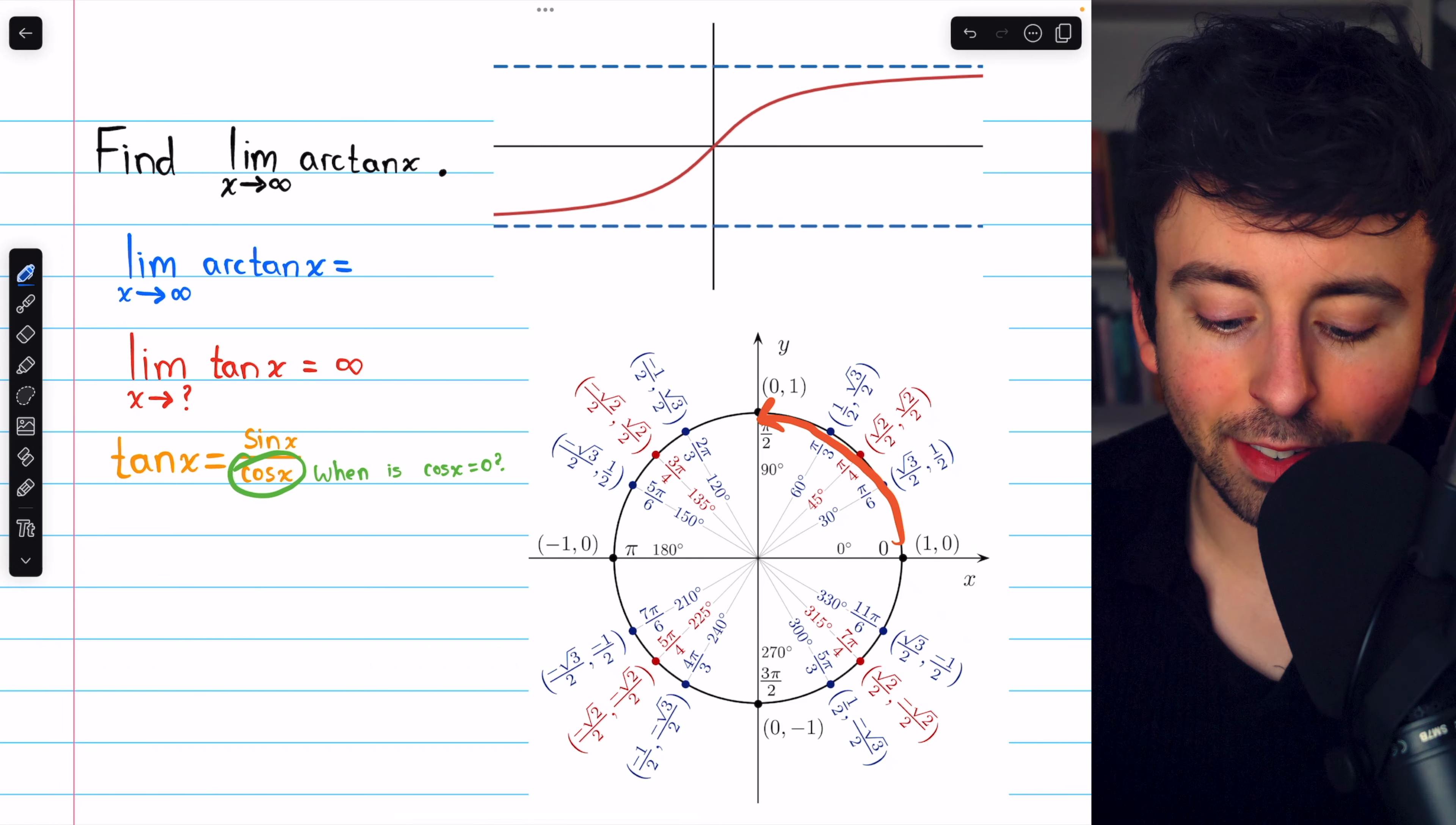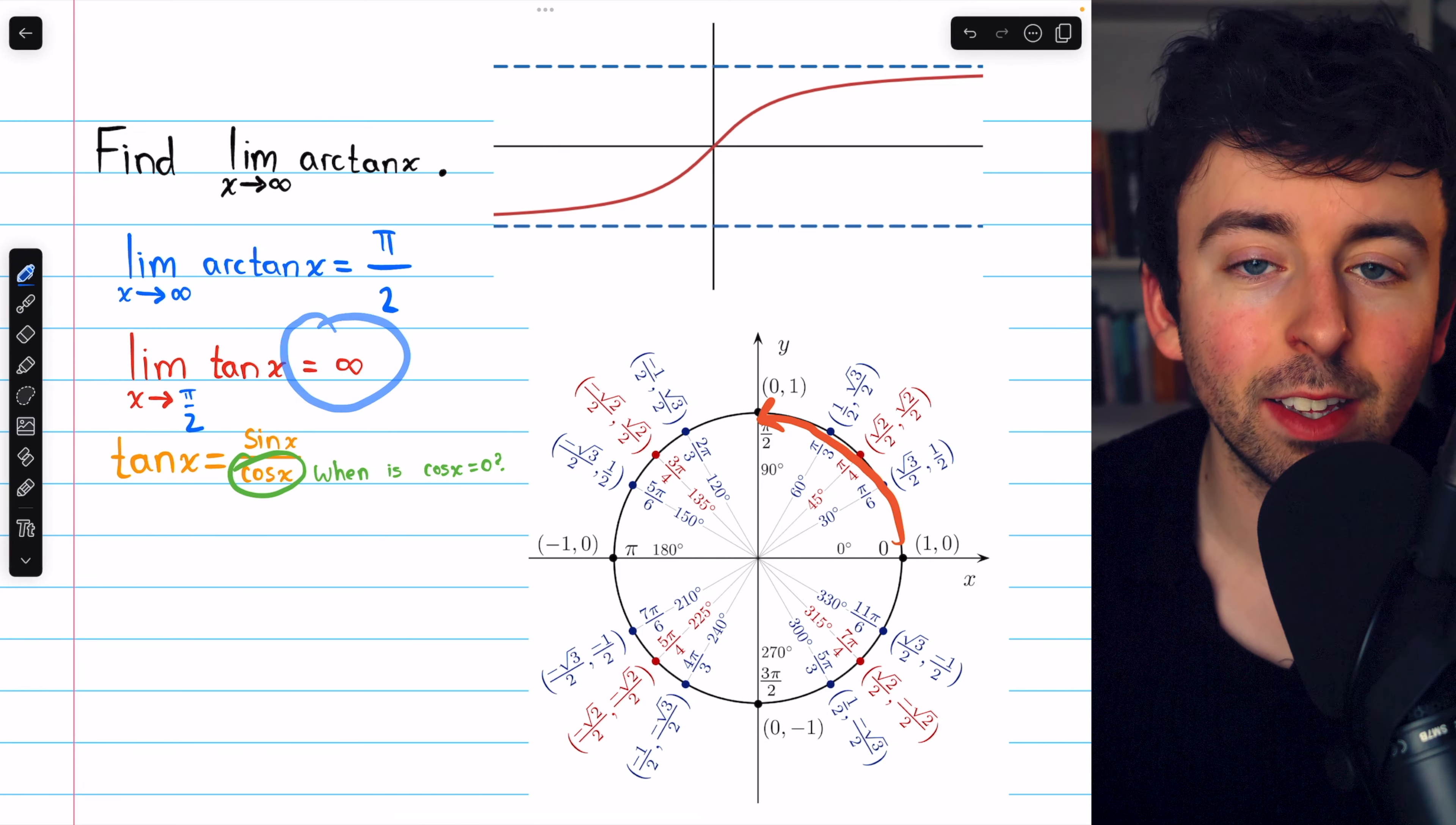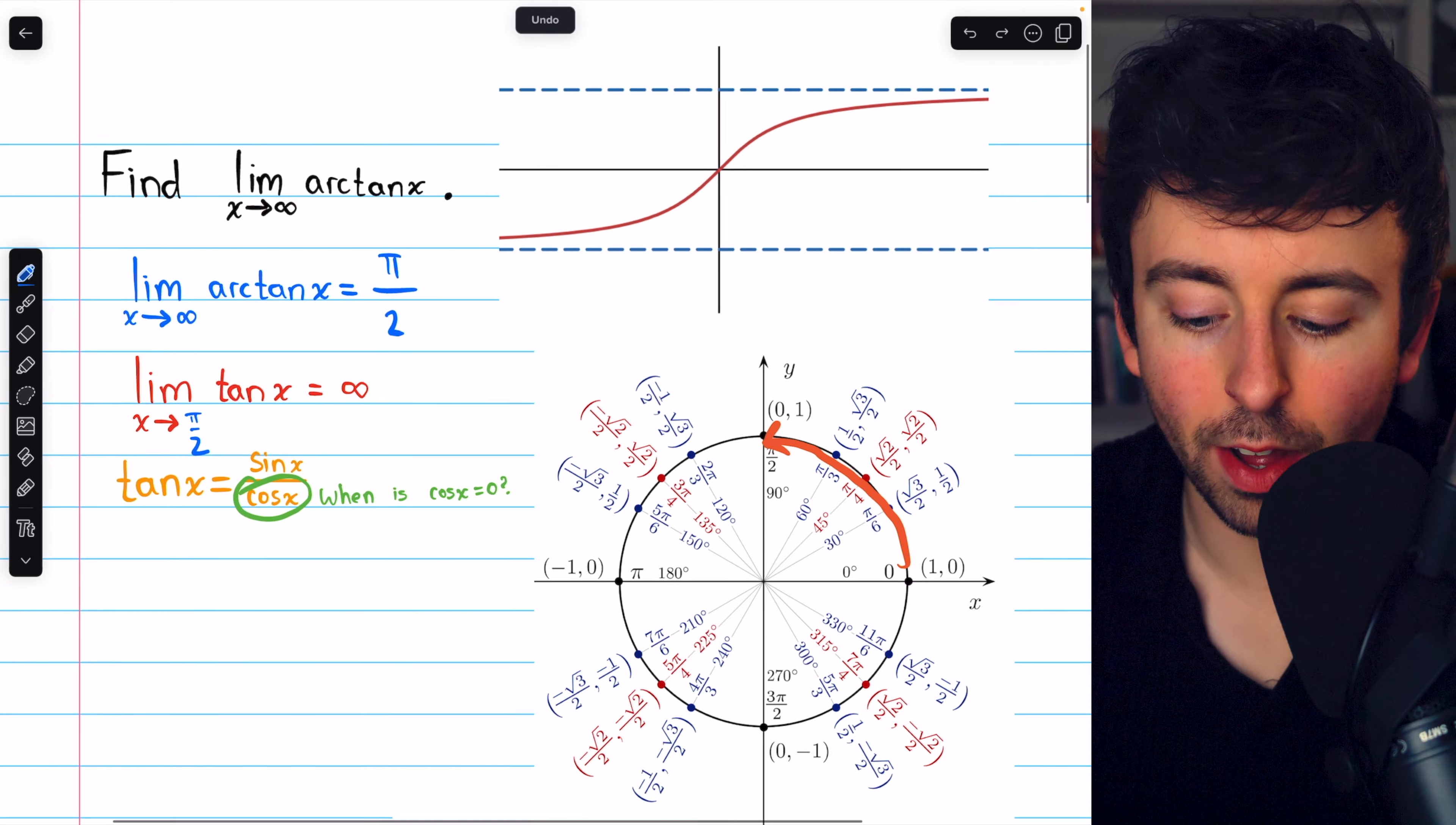The limit of arctan x as x goes to infinity is pi over two, because as x approaches pi over two, tangent goes to positive infinity. And so we can see how as tangent would go to positive infinity, its inverse function would have to go to pi over two. And that's what we see on the graph.